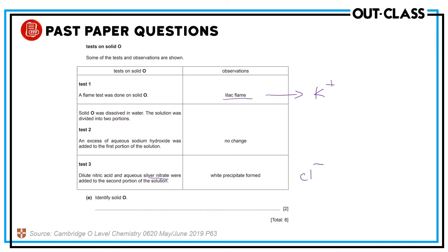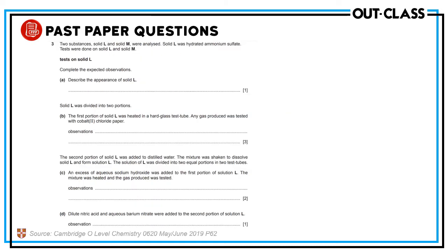Identify solid O. It has potassium ion and chloride ion, so it will be potassium chloride. Write the name; you don't need to write the formula. Another question is related to cation-anion identification.